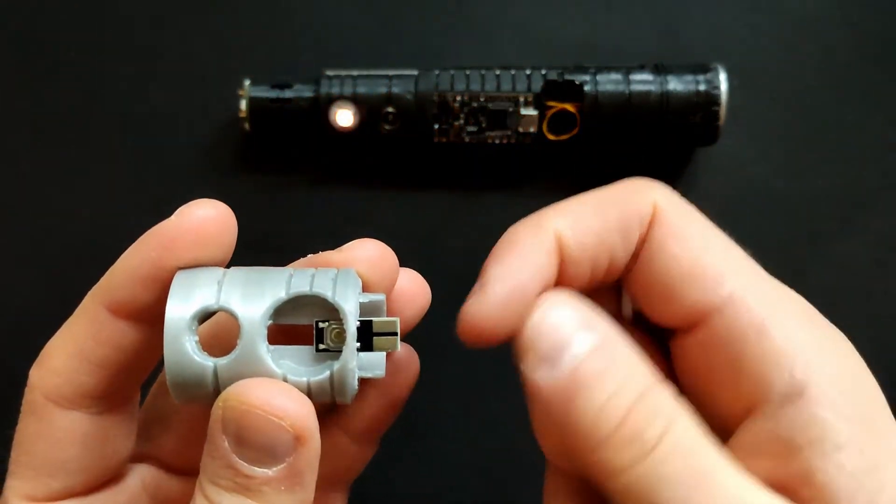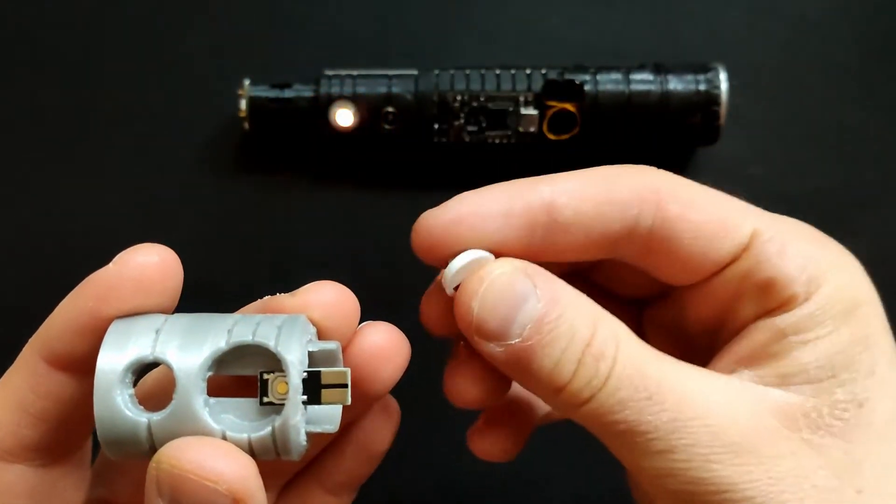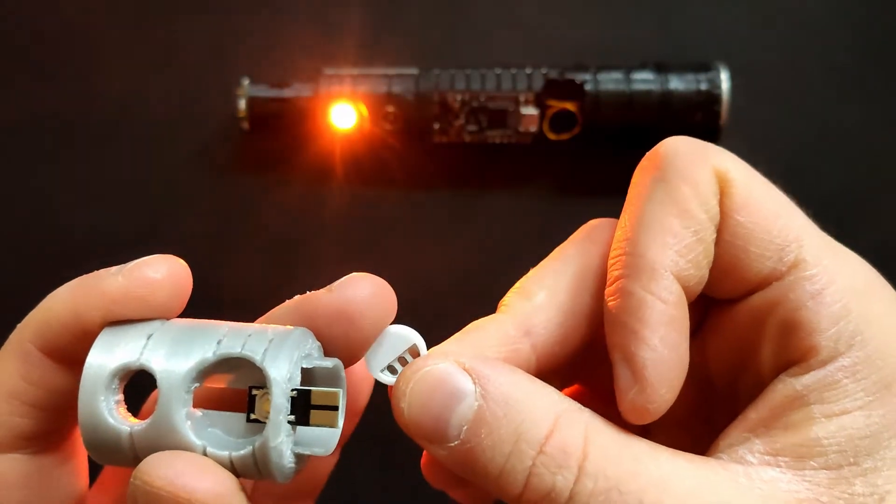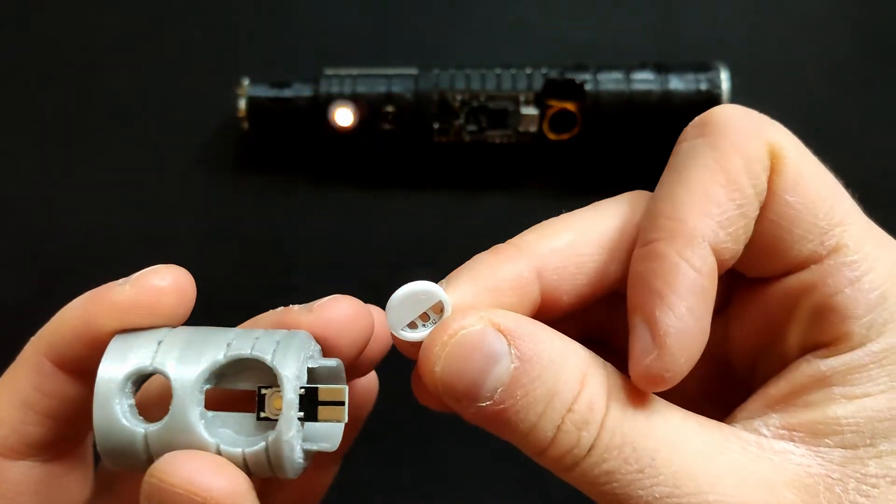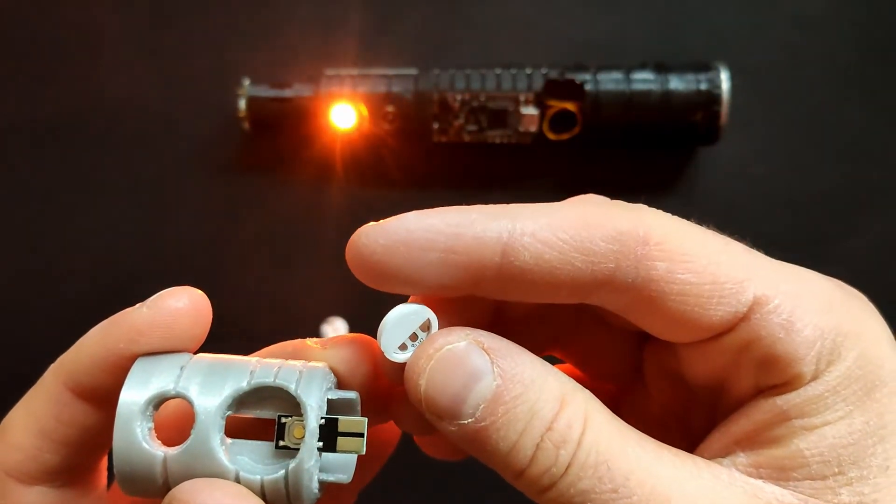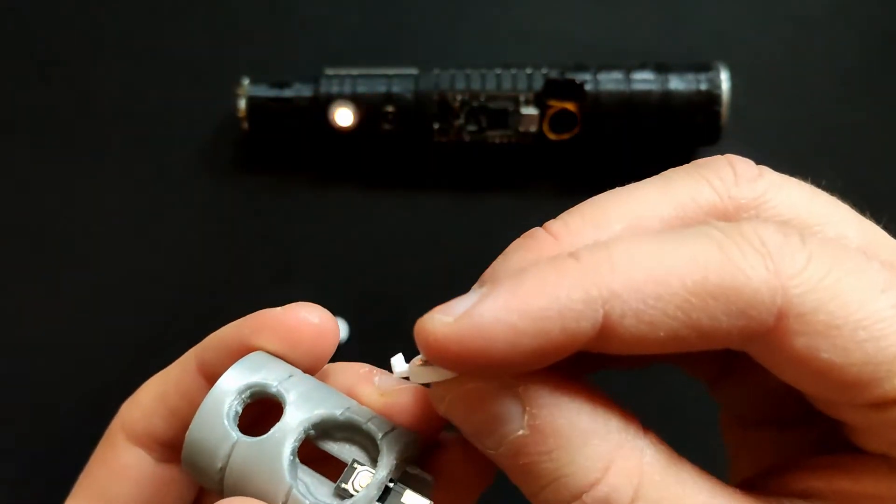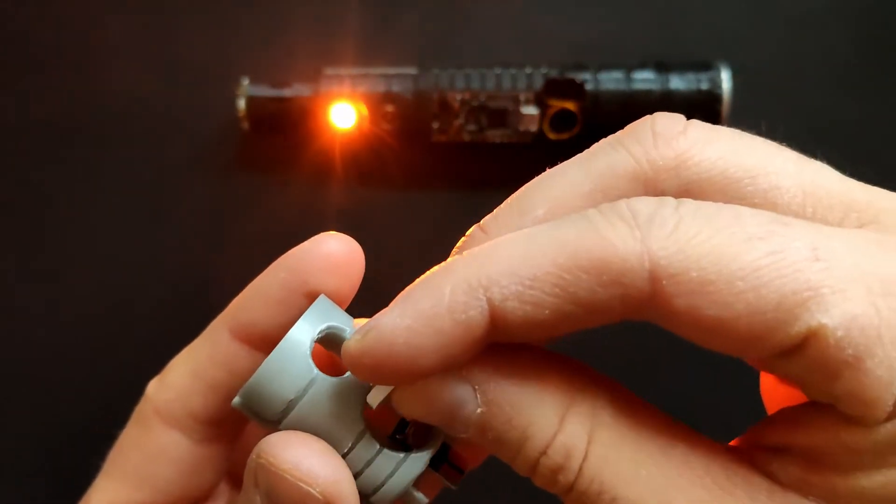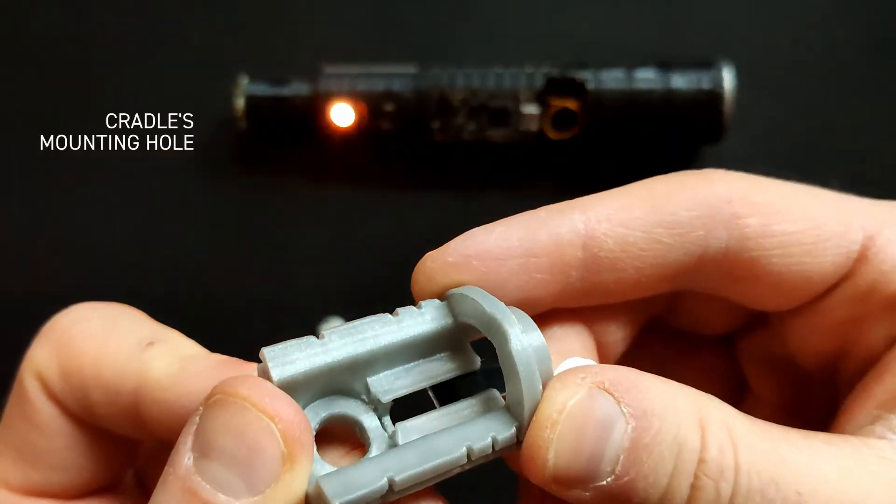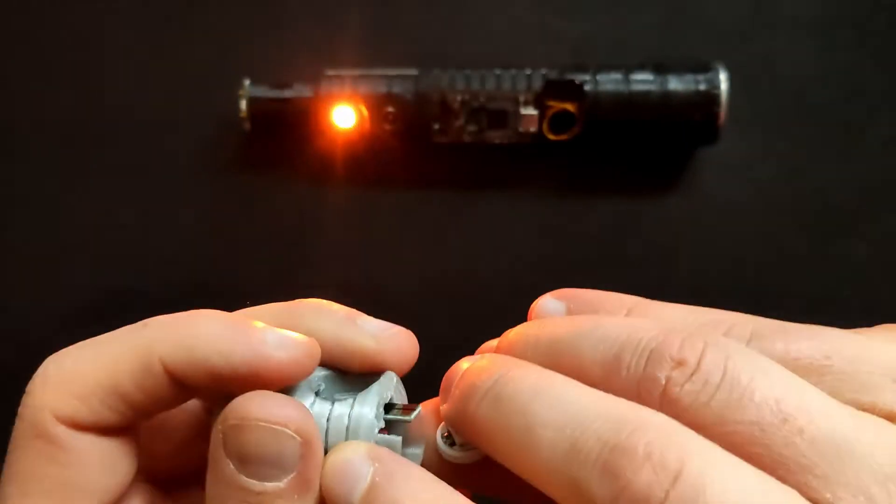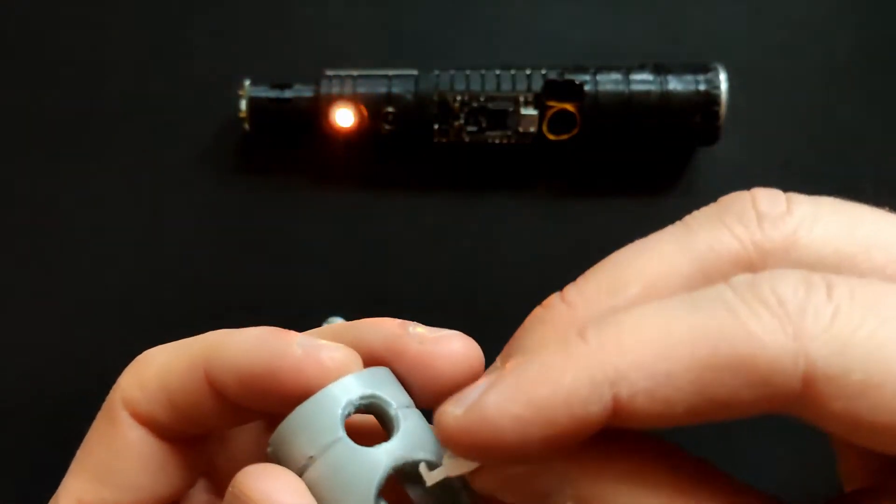This big section here, the upper one, will be pushing down on the button. So how we push it inside, we will mount it just like that because this little part will be inside this cavity you can see here. Just make it like that.